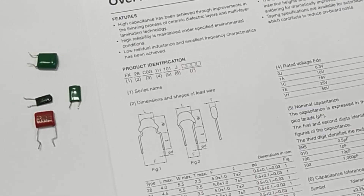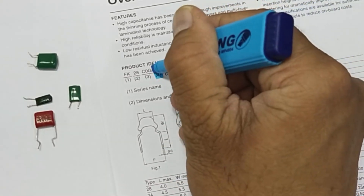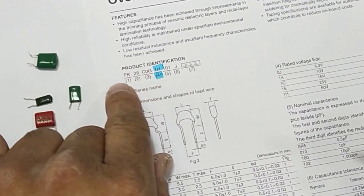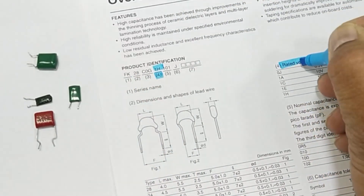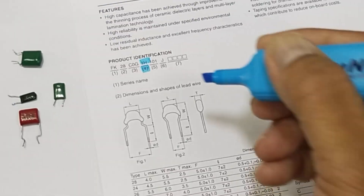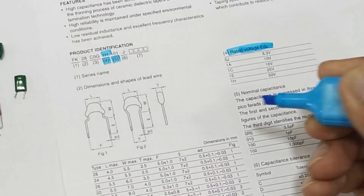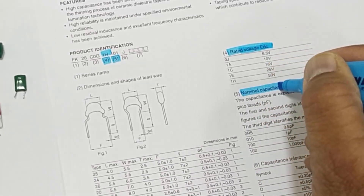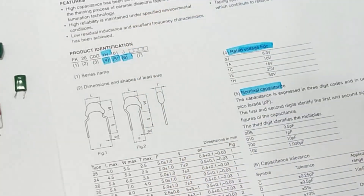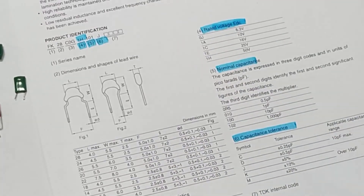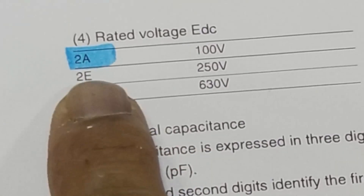Number four — for example '1H' — is the rated voltage value, which is our required parameter. These things are not printed directly on the body. Number five is the capacitance value; in our case that is 104. Number six is the tolerance; in our condition J.